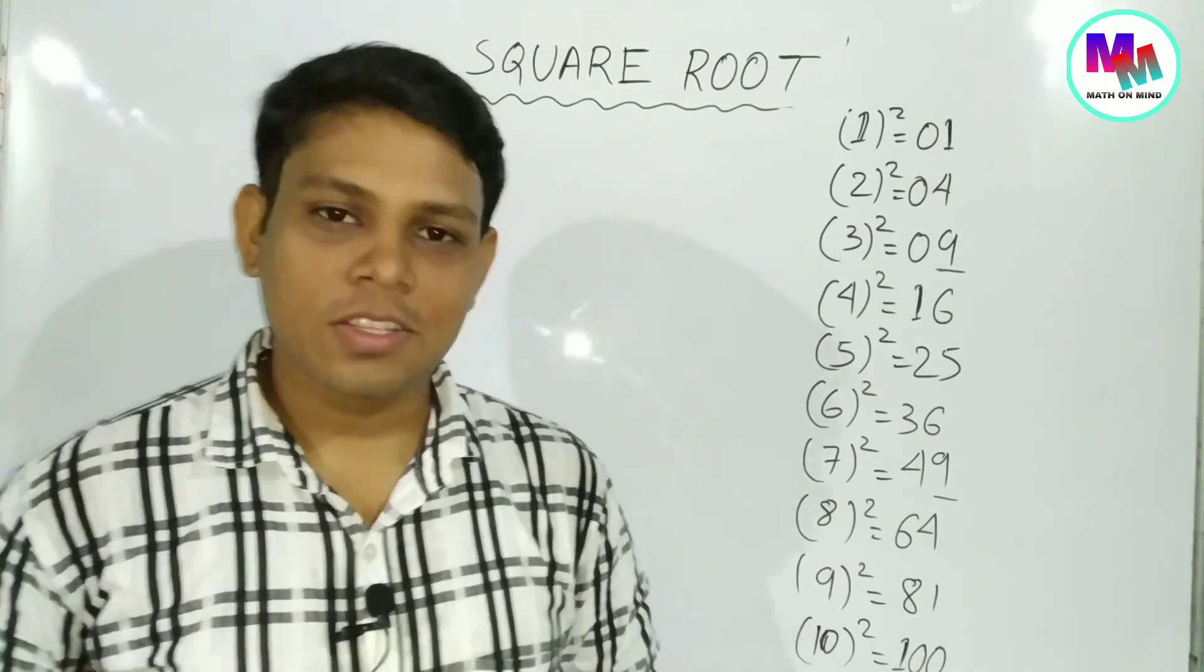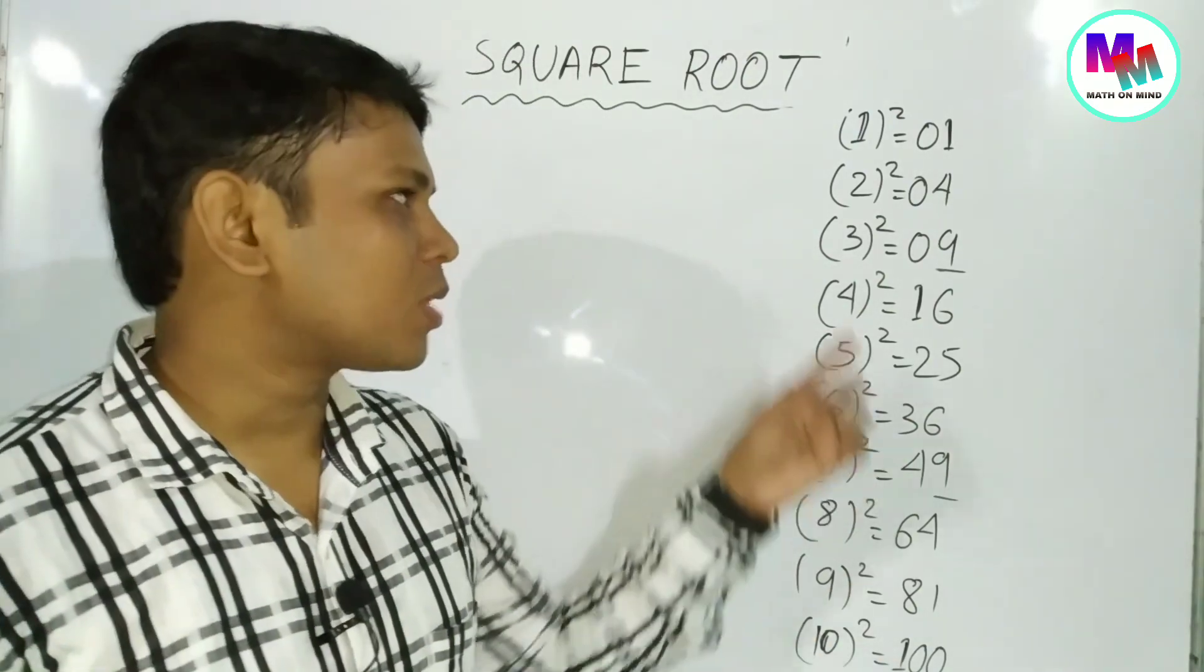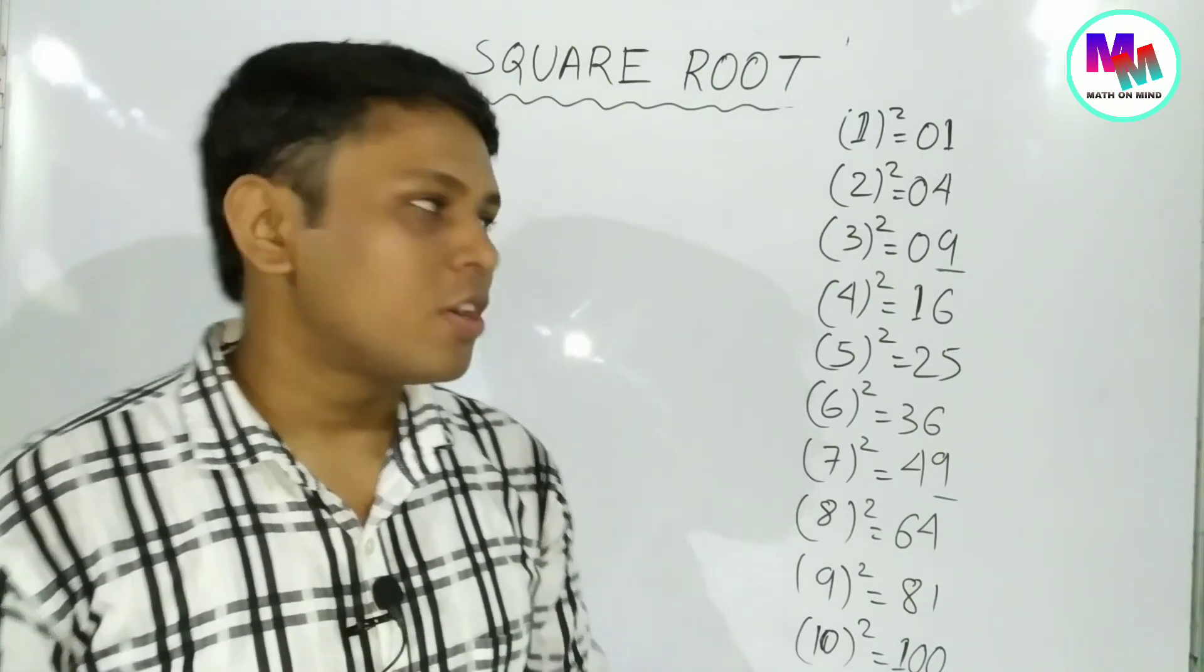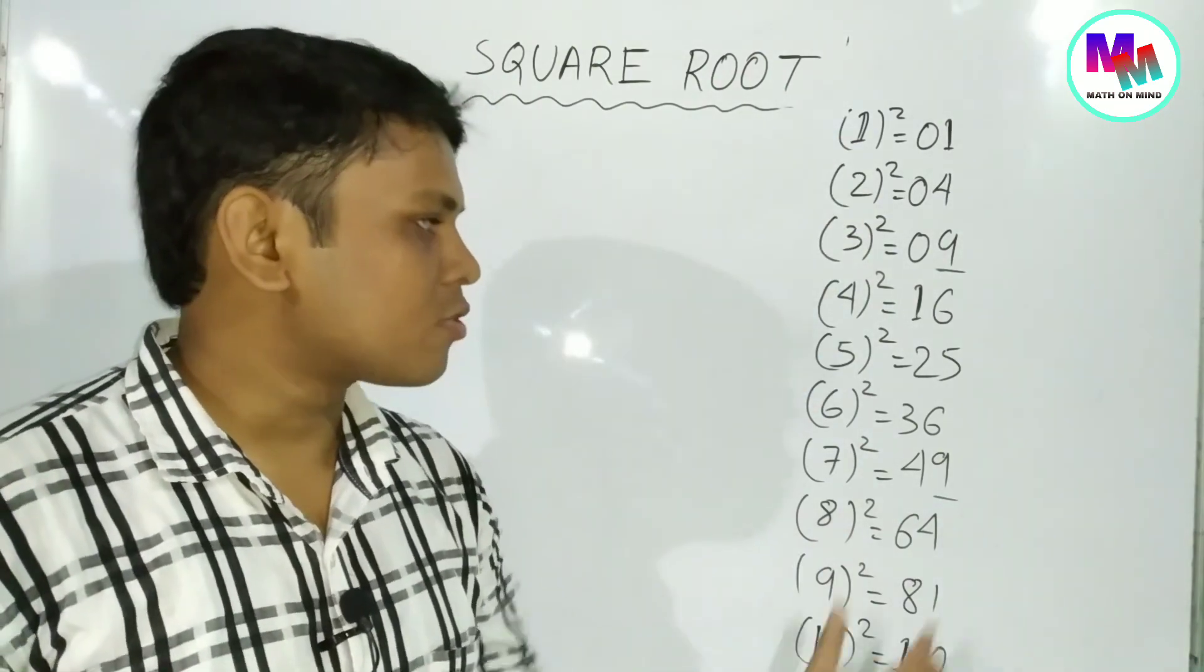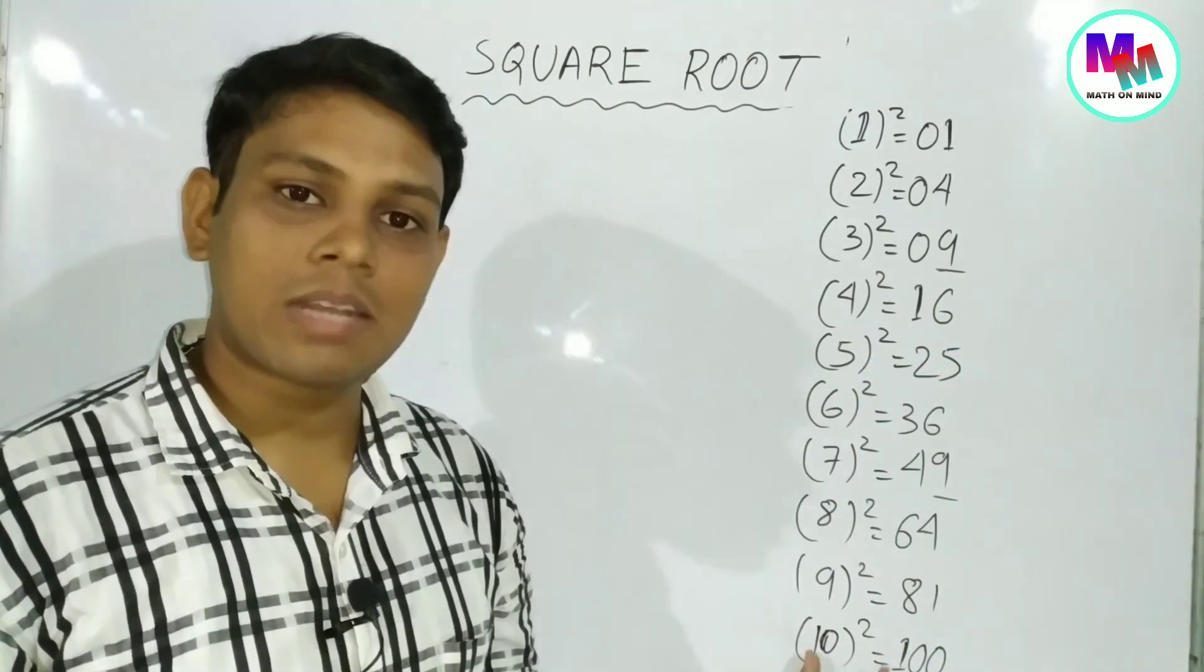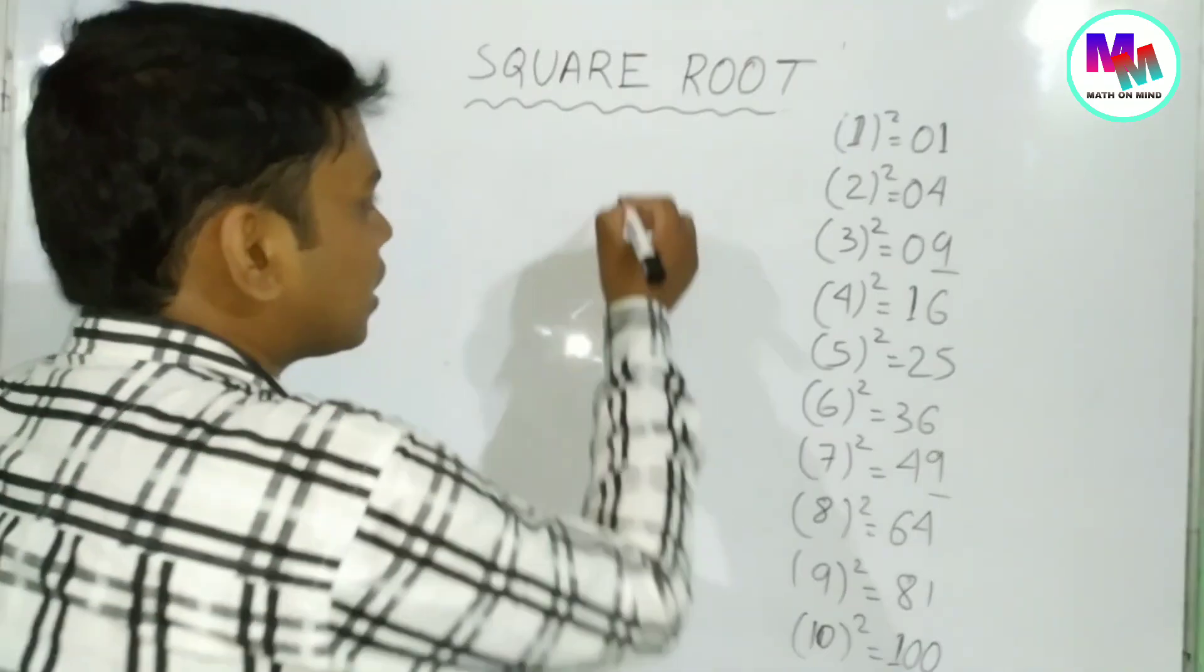The square root - we'll put it here. For perfect squares, we can convert and find the square root. So we're looking at how to find the square root of perfect squares using this method.